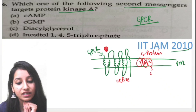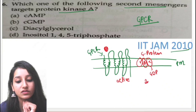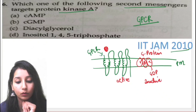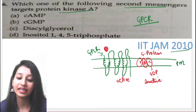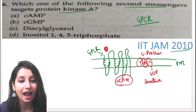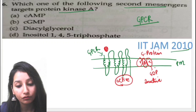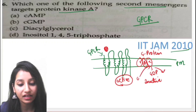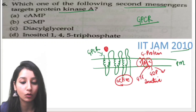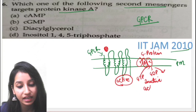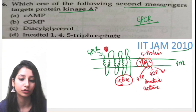Normally, the alpha subunit is bound to GDP — this is the inactive form. But when the GPCR is activated, GDP is removed and GTP binds to the alpha subunit, making it active.